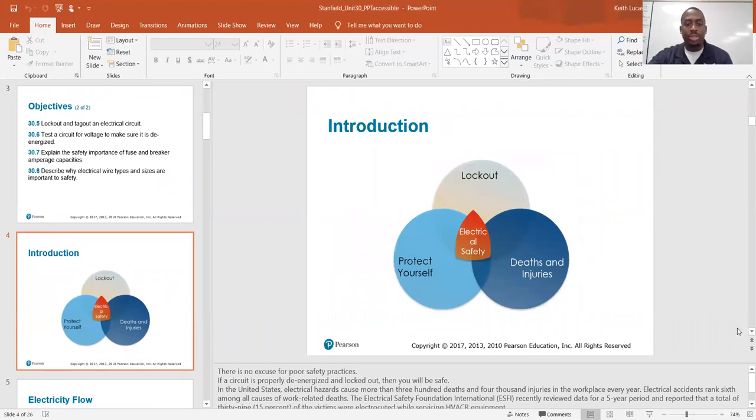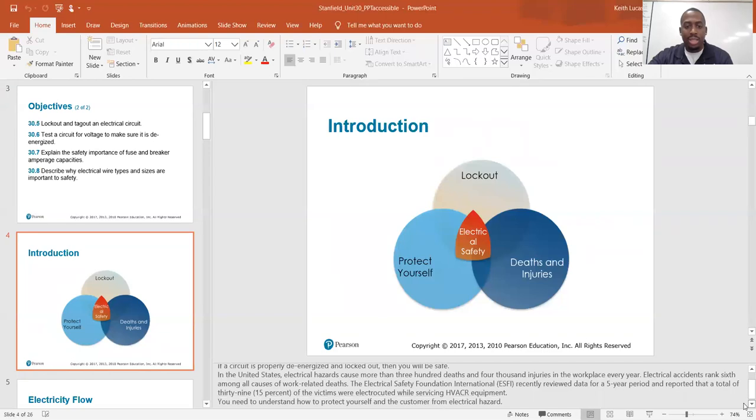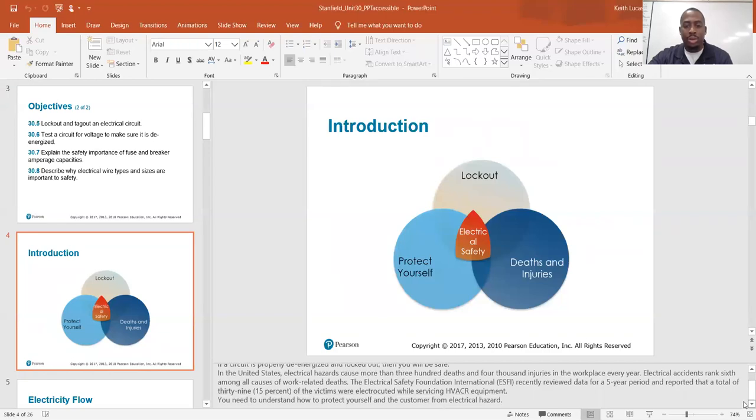There's no excuse for poor safety practices. If a circuit is properly de-energized and locked out, then you will be safe. In the United States, electrical hazards cause more than 300 deaths and 4,000 injuries in the workplace every year. Electrical accidents rank sixth among all causes of work-related deaths. The Electrical Safety Foundation International recently reviewed data for a five-year period and reported that a total of 39 victims were electrocuted while servicing HVAC equipment.